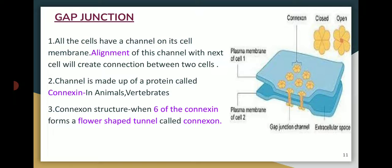The channel is made up of a protein called connexin. In animals and vertebrates, this channel is made up of connexin protein. When six connexin proteins come together, they form a flower-shaped tunnel called a connexon. From figures it is clear that six connexins form this flower-shaped tunnel. If the connexon is closed, there is no hole in the tunnel structure; if it is open, a hole appears in the center of the flower-shaped tunnel.